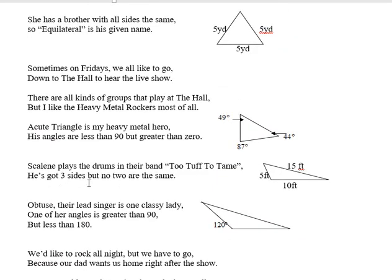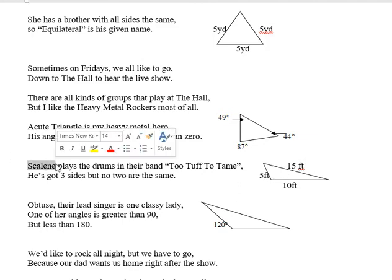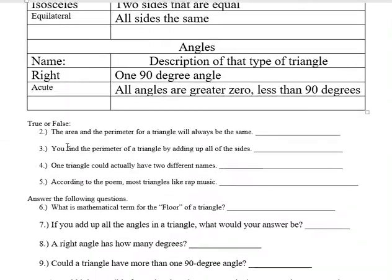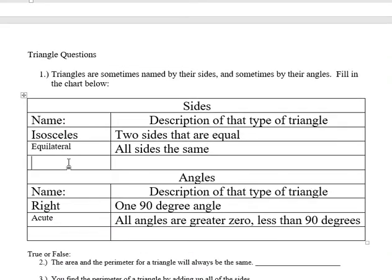All right. And then scalene, well scalene has three sides but no two are the same. So that has to do with the sides. So a scalene has no equal sides. That's the third one for sides.